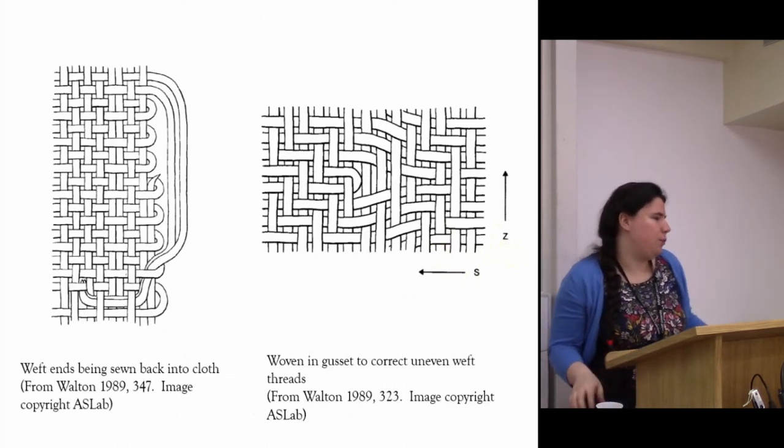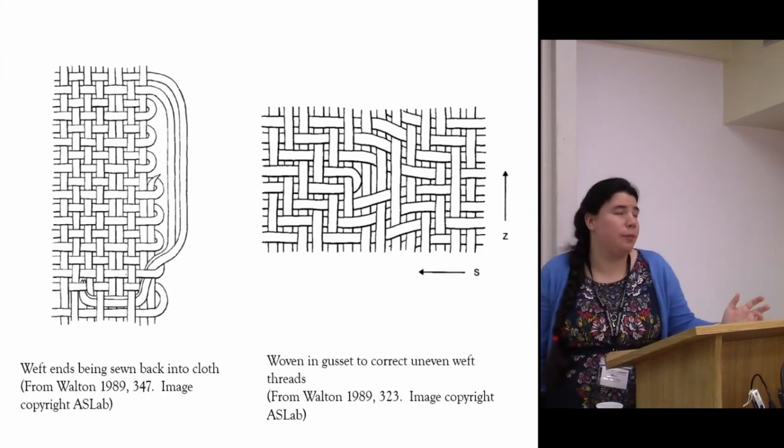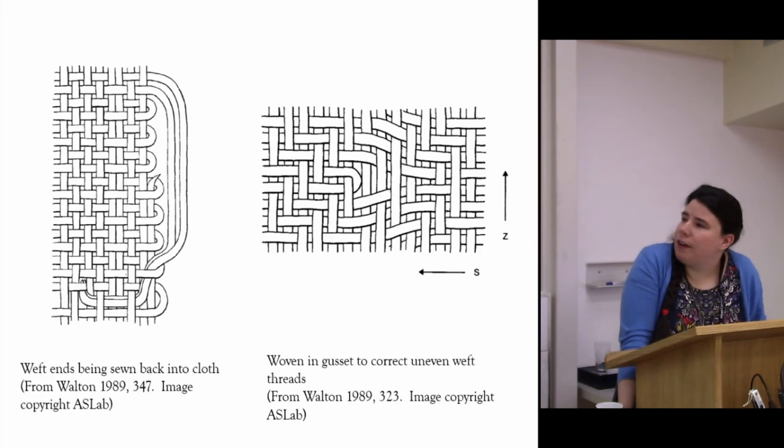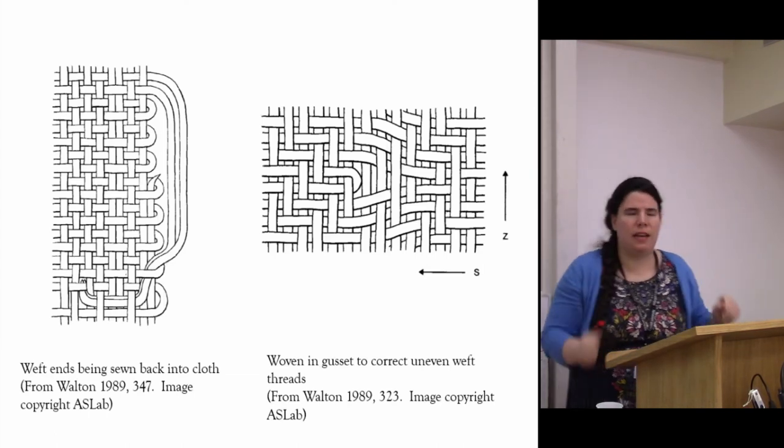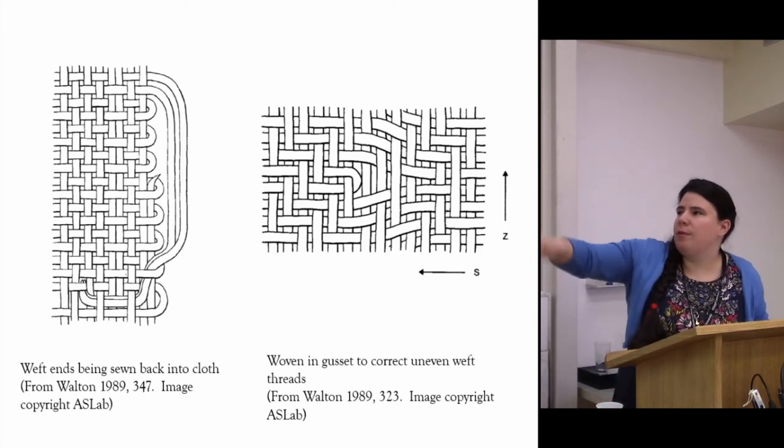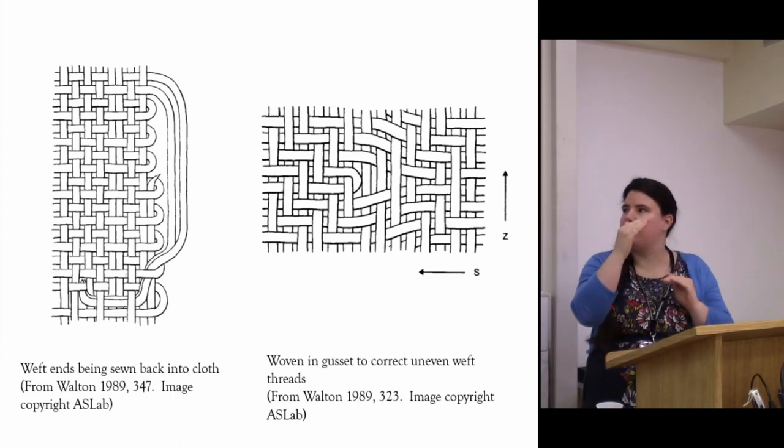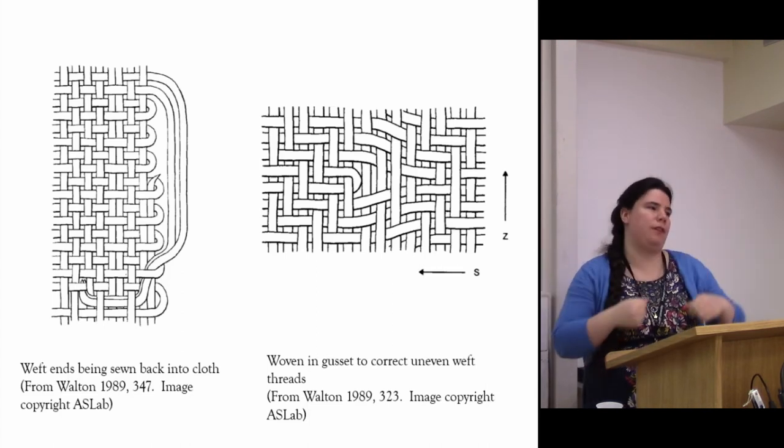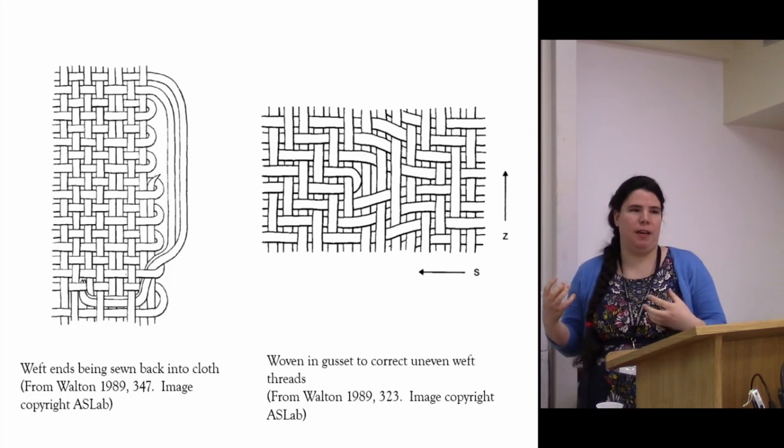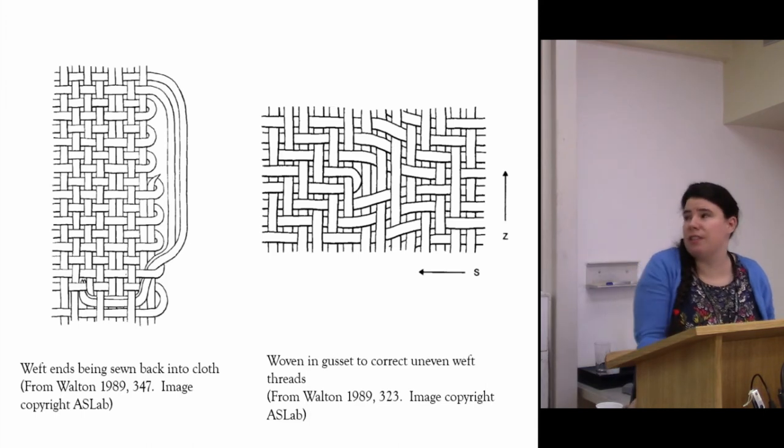We also get the reverse which is examples of extra time taken to potentially improve the appearance of an object. The image on the left there is an example of loose weft threads being darned back into the cloth. That's extra time being taken to make sure that you don't have these dangling ends and other issues. The image on the right is what's called a weft gore. What's happening in that cloth is that it's becoming progressively more uneven and an extra bit of weft has to be woven in, not necessarily right to the end, to make the cloth even again. That's something that doesn't have to be done. But a conscious decision is clearly being made in order to improve the appearance and potentially the texture of the cloth.